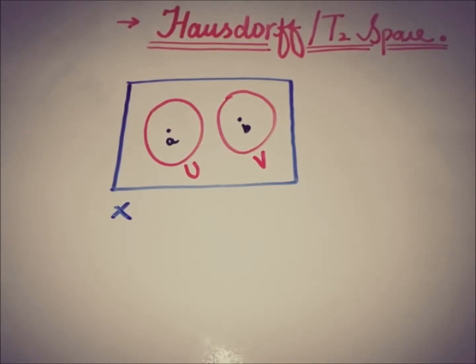U and V are open sets for a topological space X, and the intersection of U and V must be empty in order for the space to be a Hausdorff space.